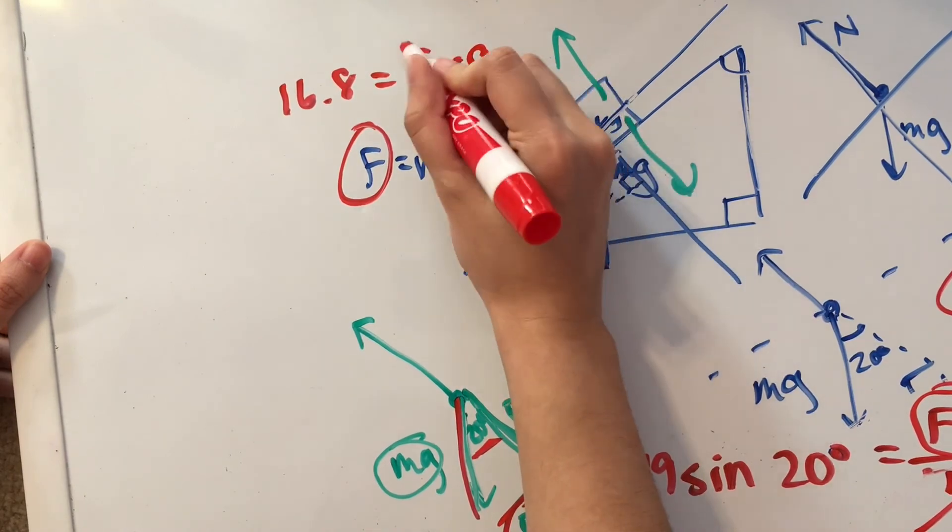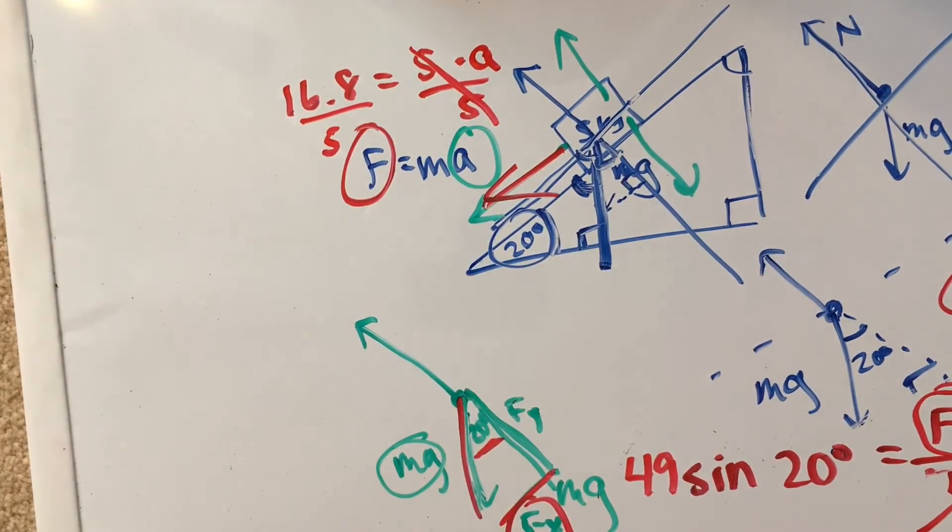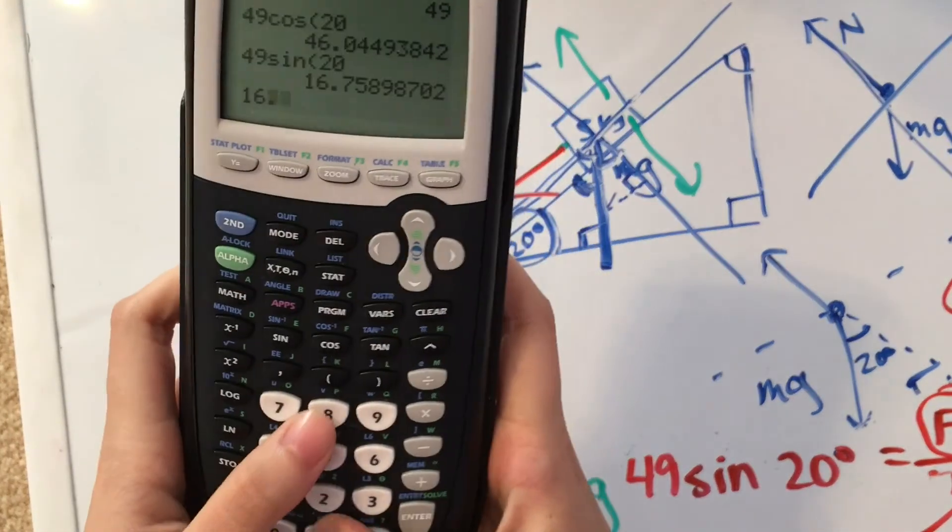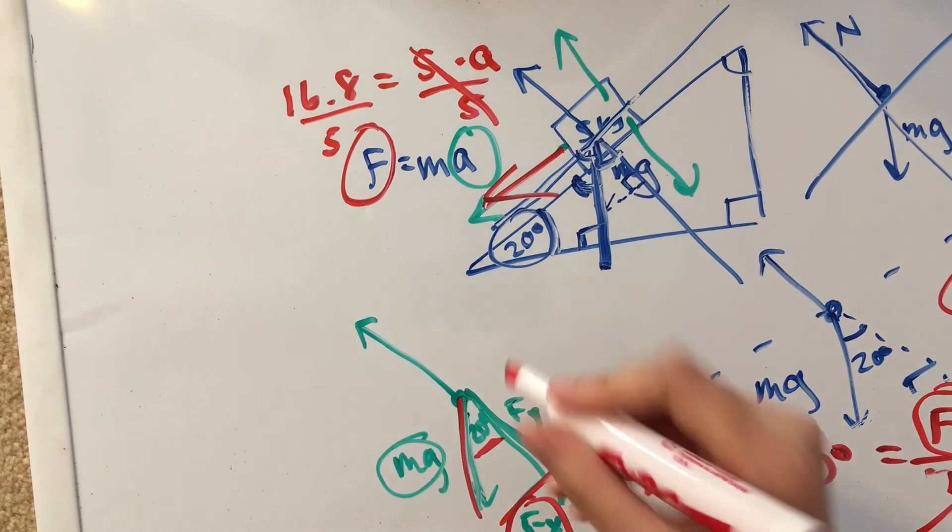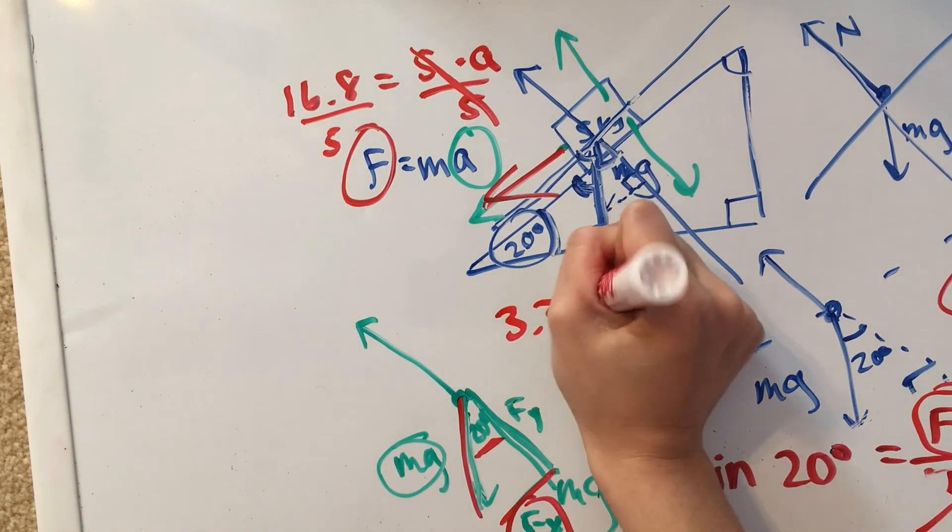So we have 16.8 equals mass, which is 5 kilograms times acceleration. And so we divide both sides by 5 to get that our acceleration is 16.8 divided by 5, or 3.36 meters per second squared.